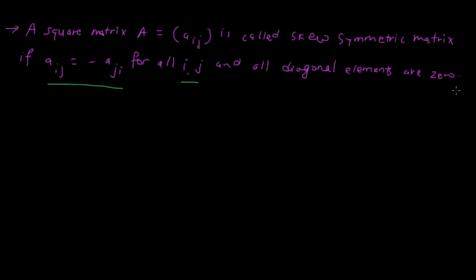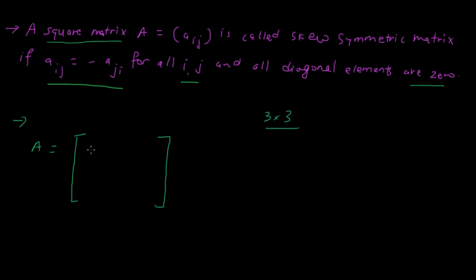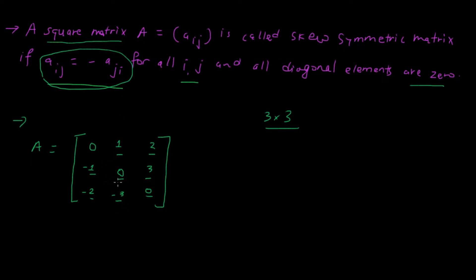First of all, let us form a matrix A. It must be a square matrix — here it is a three by three matrix. All the diagonal elements must be zero. So when a value is one, it must pair with minus one; when it is two it must be minus two; when it is three it must be minus three. This satisfies a_ij equals minus a_ji.